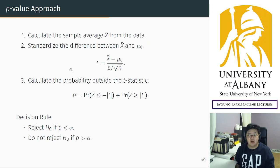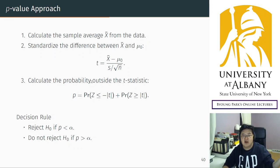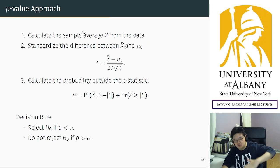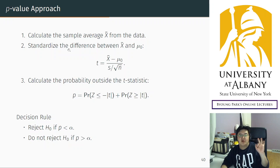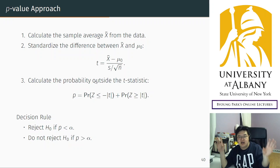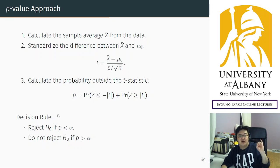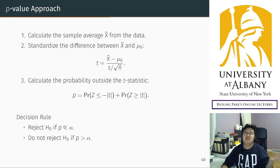The p-value approach is how I introduced the problem. From data to conclusion, the steps are: first, get the data and calculate the sample average x-bar; second, standardize the sample average — that's the standardized difference between the data and the hypothesis, which is the t-statistic; third, calculate the probability outside of the t-statistic, which is the p-value; and fourth, make the decision to reject if the p-value is smaller than the significance level, otherwise do not reject. These are four steps.